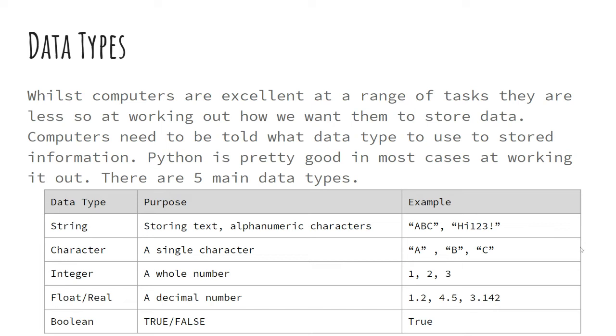You have characters. Characters where you might be storing a singular letter. So in this case, for example, A, B, C, and so on. Integers. Integers are our whole numbers. Now these, as I said, one, two, three, as an example. Negative numbers also can fall into integers as well, provided that they are whole numbers.